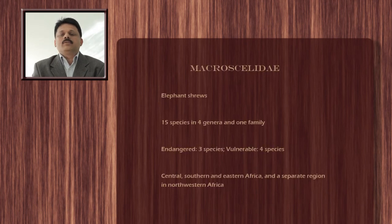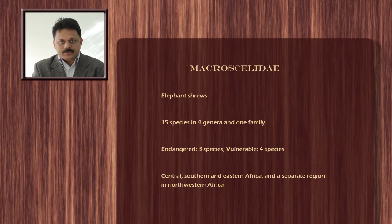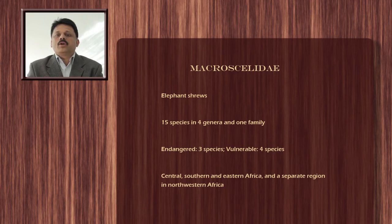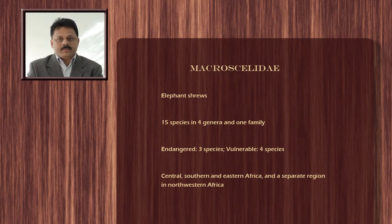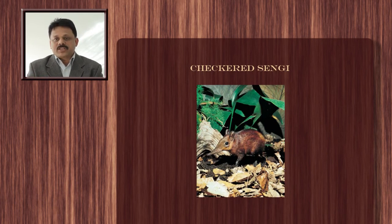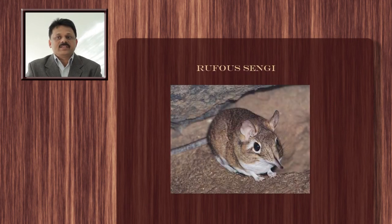The second order of placentals is Macroscelidea. Macroscelideans include a group of animals called elephant shrews. Altogether there are 50 species in four genera and one family. Macroscelideans are confined to Africa — central, southern, eastern, and parts of northwestern Africa. Many species are globally threatened. Examples include the checkered sengi and the rufous sengi.